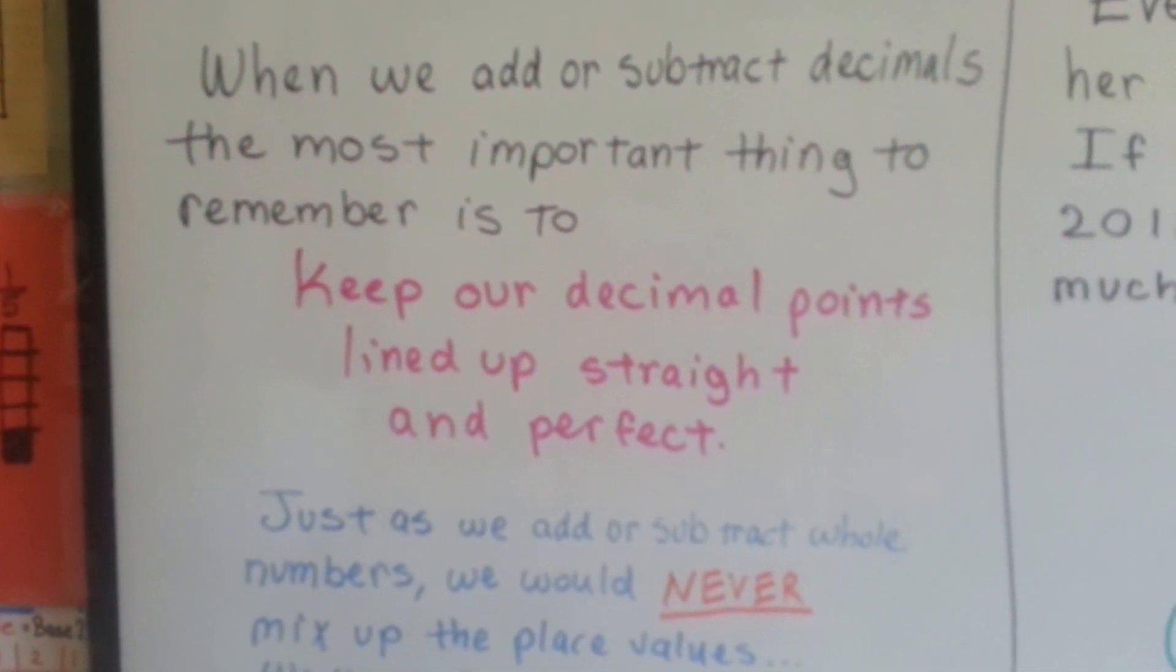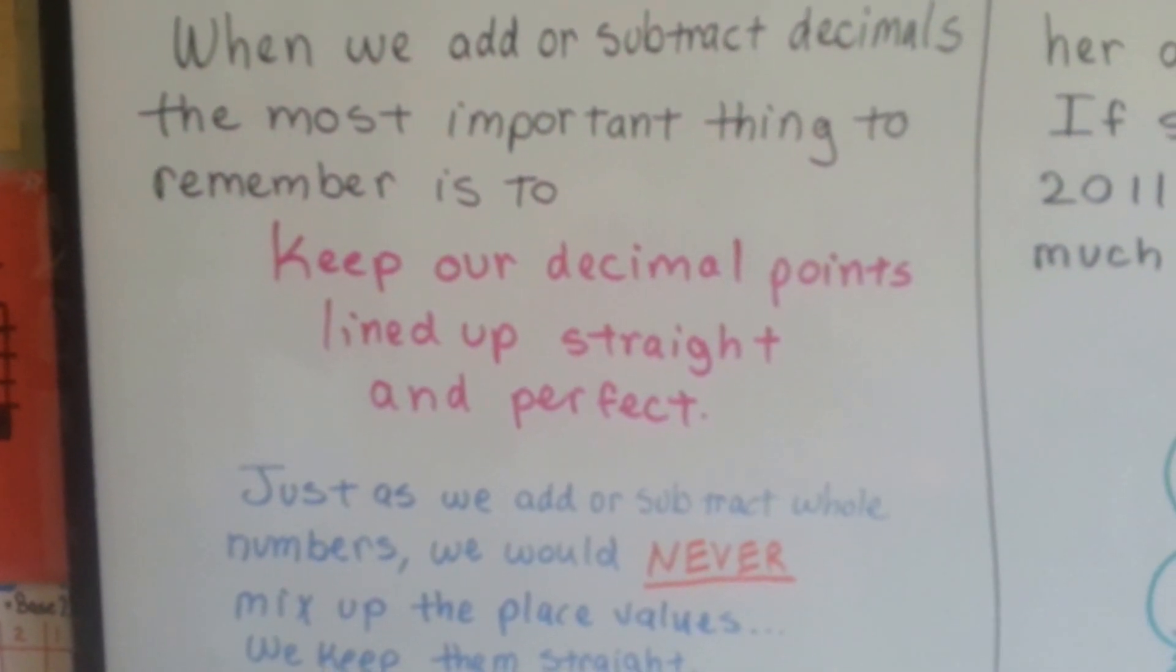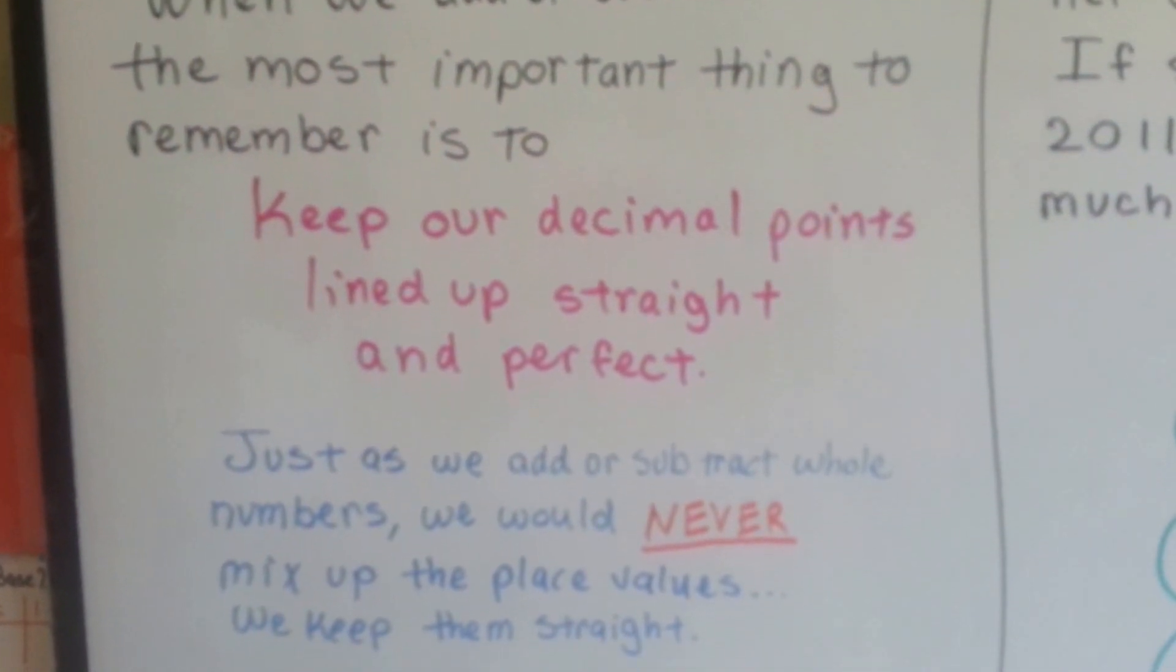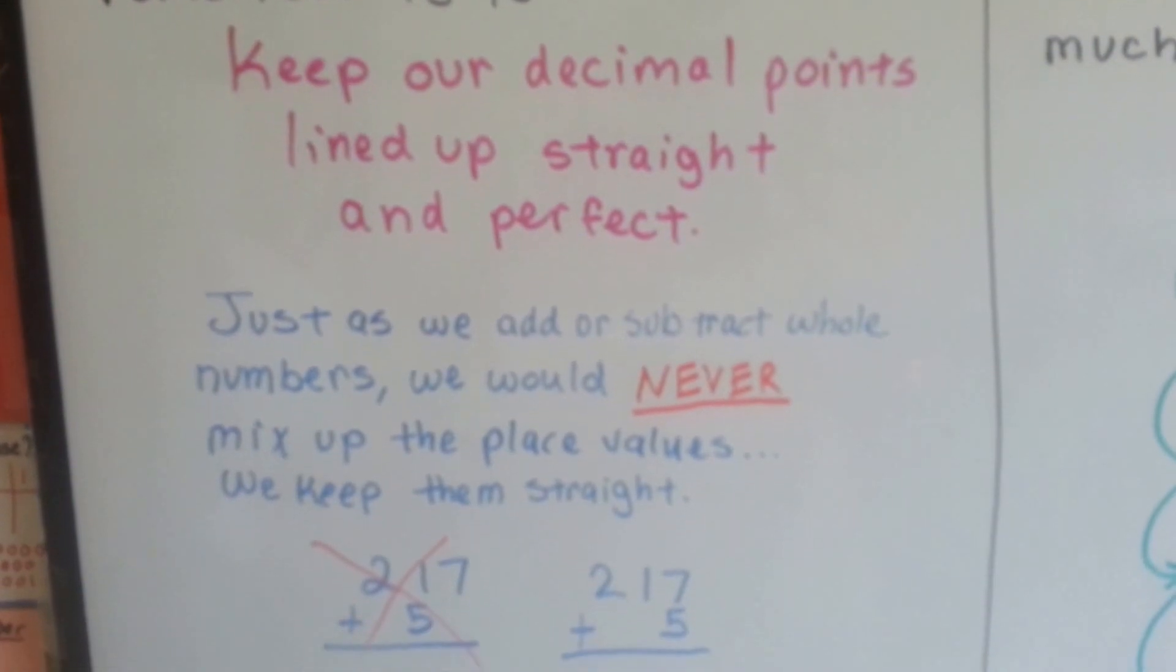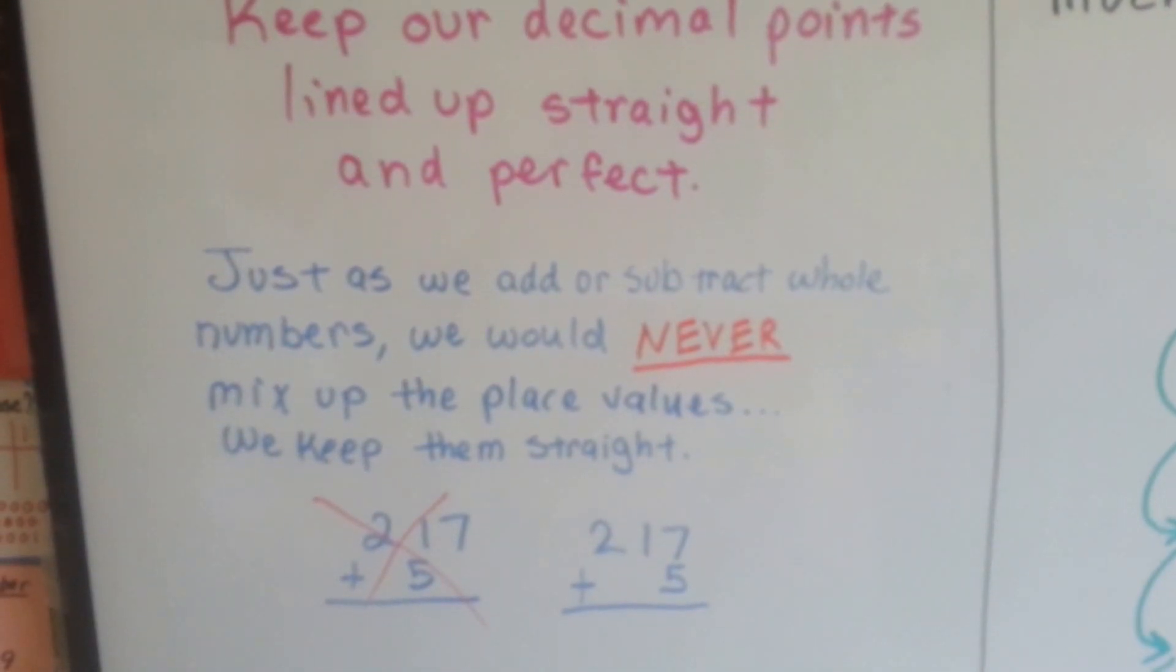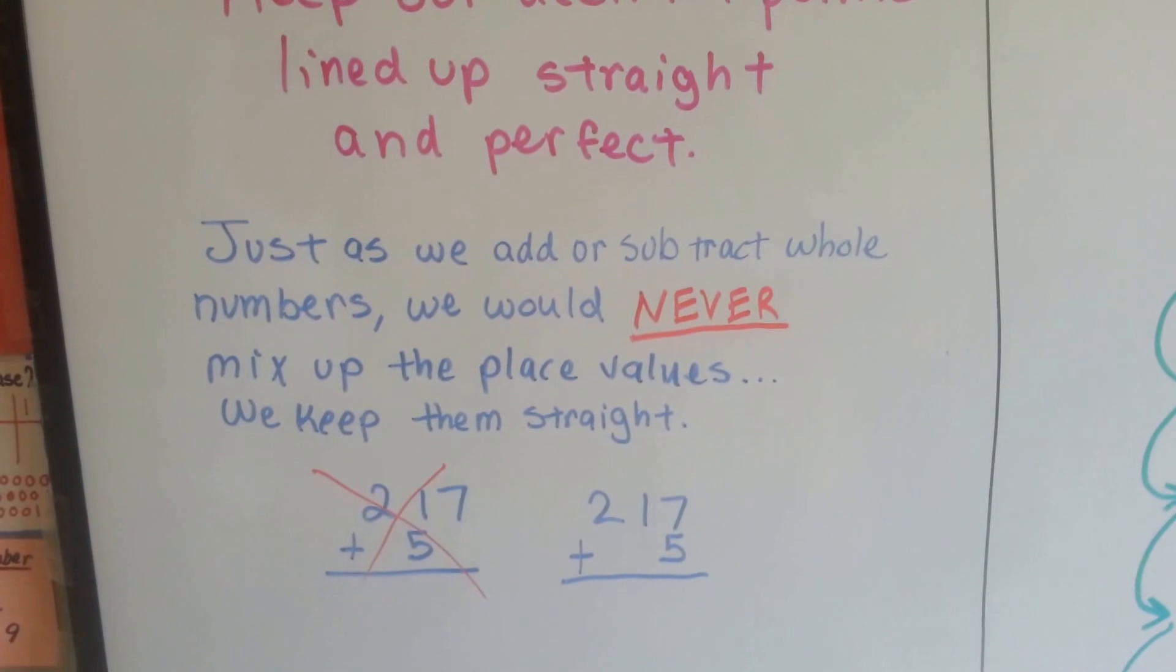When we add or subtract decimals, the most important thing to remember is to keep our decimal points lined up straight and perfect. Just as we add or subtract whole numbers, we would never mix up the place values. We keep them straight.